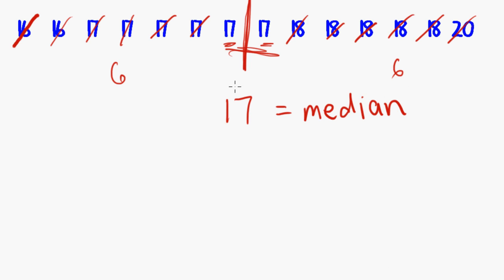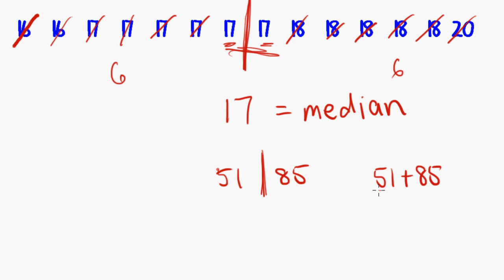If I had two different numbers that I'd met in the middle there — for example, 51 and 85, something like that — and I wanted to know halfway between them, what I would do is add them up and divide by two. So 51 plus 85 divided by two would give me halfway between those two data points, which in this example would be 68.